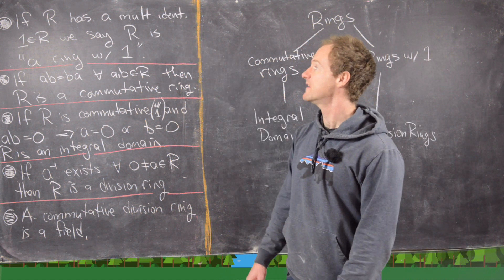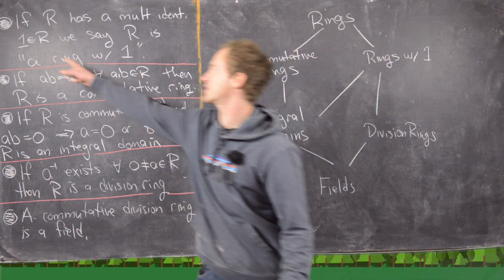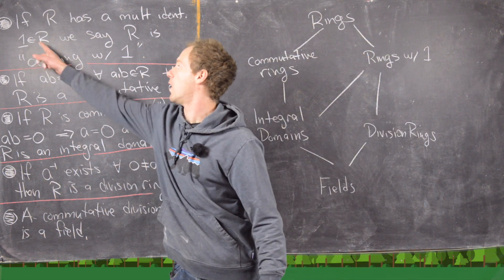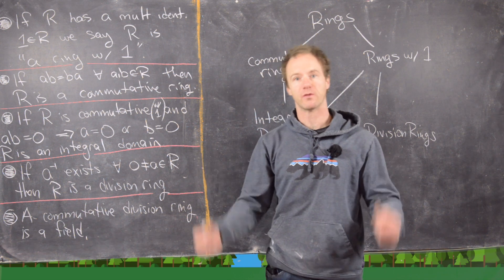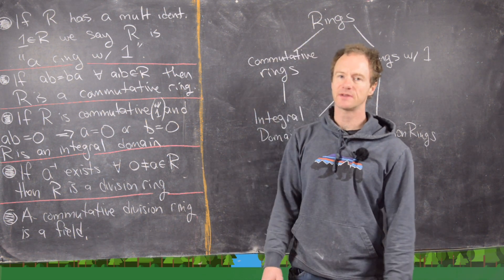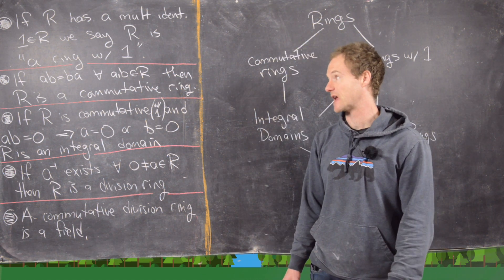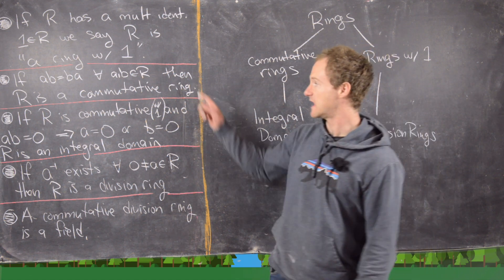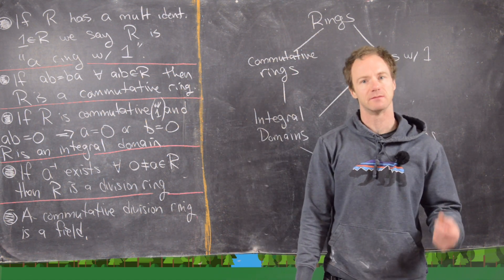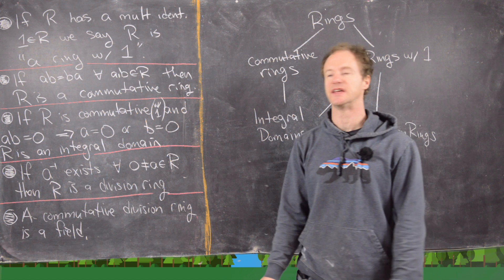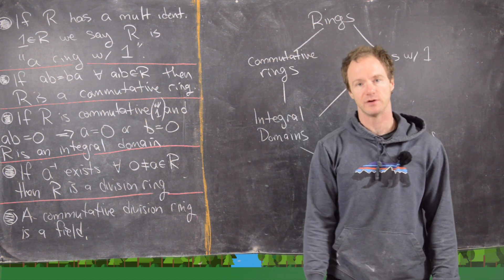If R has a multiplicative identity, which we generally call 1, then we say R is a ring with 1, sometimes called a ring with identity. Then if AB equals BA — in other words the multiplication is commutative — then R is called a commutative ring.